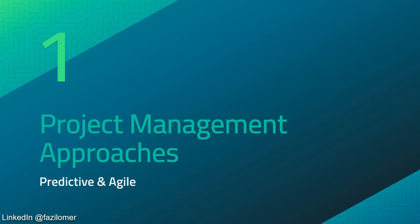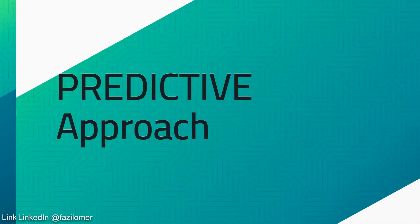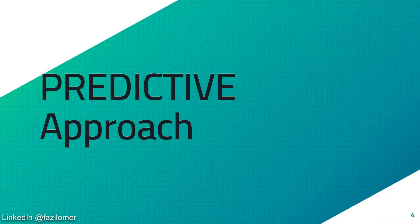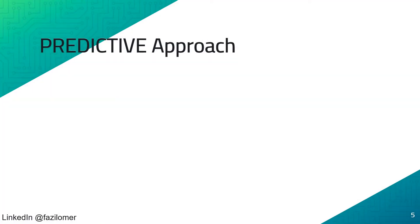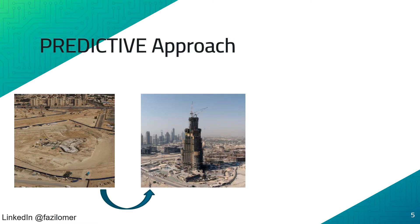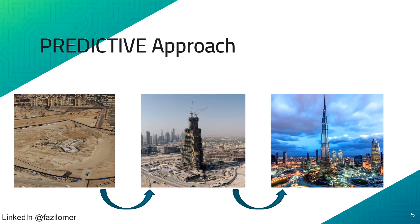Let us discuss two major types of project management approaches separately. The predictive, or waterfall approach of management, is used in projects where we can predict everything upfront. For example, in any high-rise building, civil structure works will be followed by foundation works, MEP works will follow structure works, and so on. In most cases, the return of investment for the owner will be generated only after the entire completion and handing over of the project.